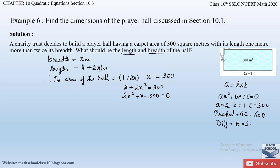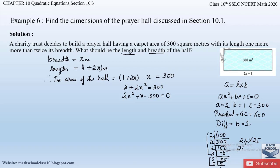We need to factorize 600 to find two factors whose product is 600 and whose difference is 1. Factorizing 600 gives 2 × 2 × 2 × 3 × 5 × 5. Grouping: 2 × 2 × 2 × 3 = 24 and 5 × 5 = 25. So 24 × 25 = 600, and 25 - 24 = 1. The difference is 1, which matches B.